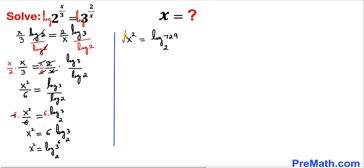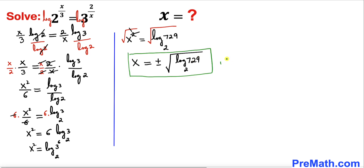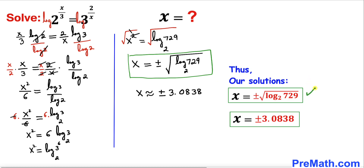Now let's undo the square by taking the square root on both sides. We get x equals plus or minus the square root of log base 2 of 729. Using a calculator, the decimal value is approximately positive or negative 3.0838. So here are our solutions in logarithmic notation as well as decimal notation.